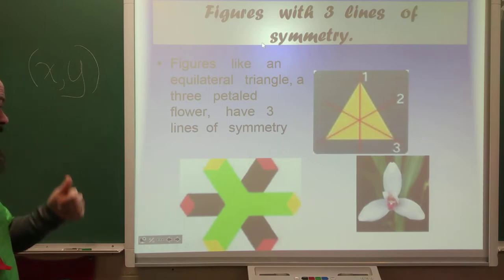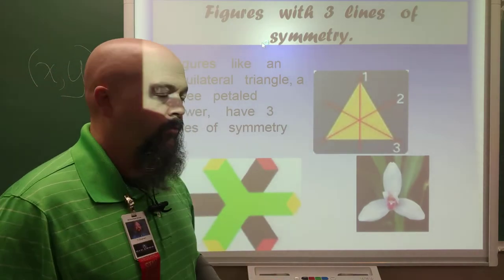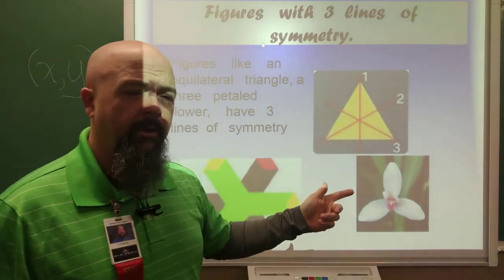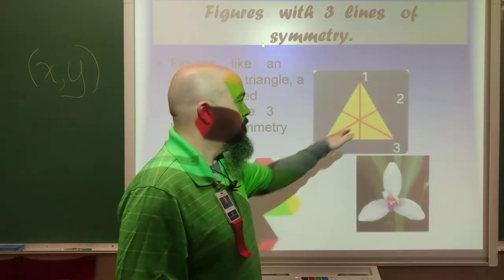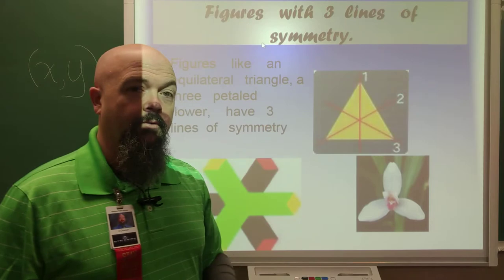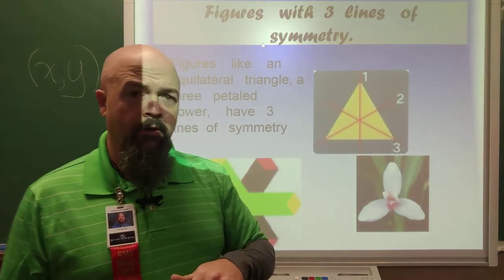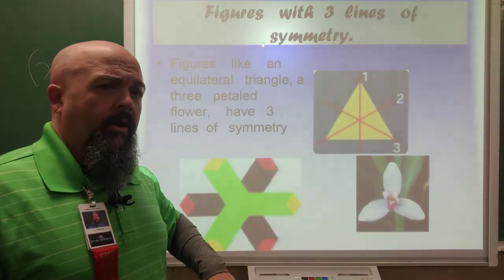Three lines of symmetry. Starts getting a little more complex shapes sometimes. Equilateral triangles, they will definitely be three lines of symmetry. Equilateral, of course, meaning all sides and angles are the same. So, that means you can cut through that in three different points. That will come up more in the next section when we start talking about geometry. But, know that triangle. Three lines of symmetry.